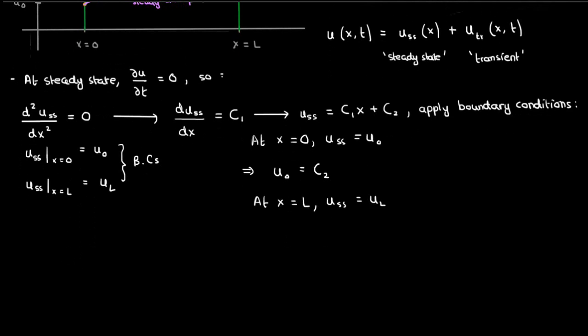And at x equals L, u_ss equals u sub L. So c1 is u sub L minus u0 over L. So our steady state solution is u_ss equals (u_L minus u0) times x over L plus u0. And that's it.